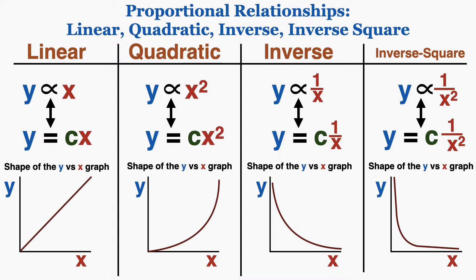These are the four main proportional relationships we worry about in IB physics, though there are others. In a linear relationship, y is proportional to x, resulting in a straight line when graphed. In a quadratic relationship, y is proportional to x squared, giving a quadratic curve. In an inverse relationship, y is proportional to 1 over x. And in an inverse square relationship, y is proportional to 1 over x squared. You can see the distinct shape of each graph.